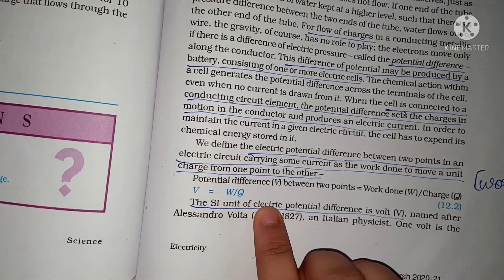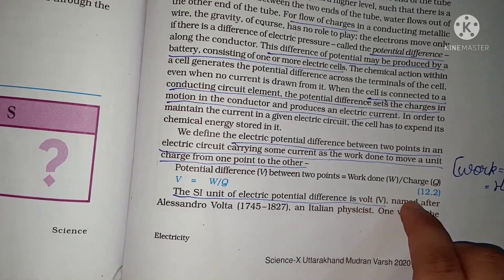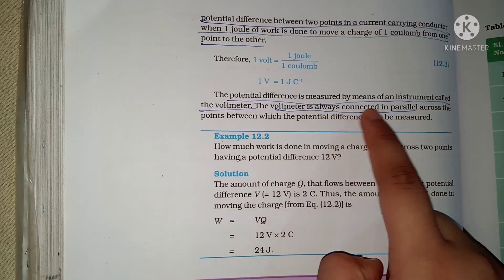The SI unit of electric potential difference is volt. So, we denote the volt with the symbol capital V, which we have done here. And here, an important thing is the voltmeter is always connected in parallel.